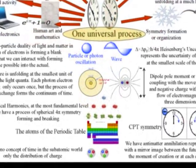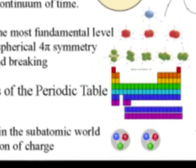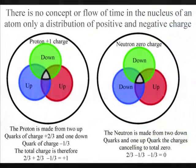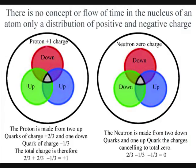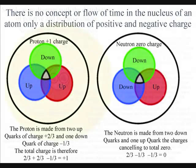If we start at the bottom of the diagram, we see that there is no flow or concept of time in the subatomic world within the atoms. All we have is the distribution of positive and negative charge within the atoms.